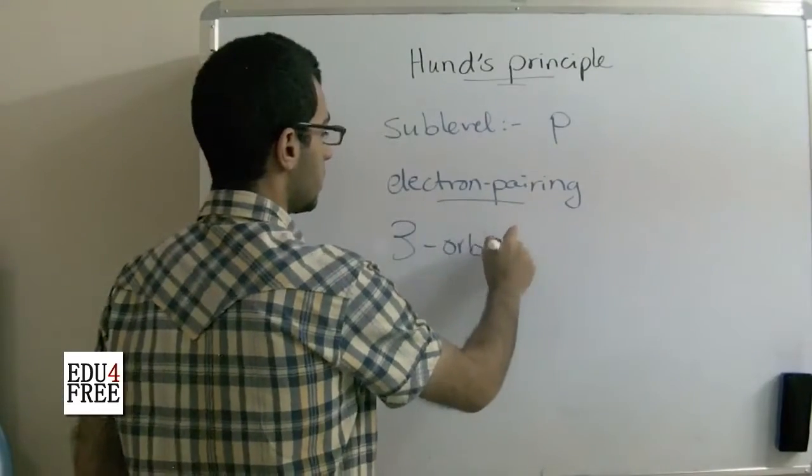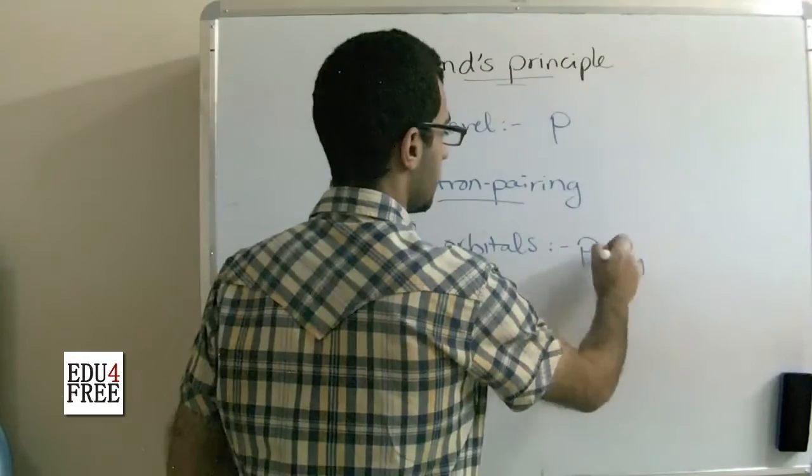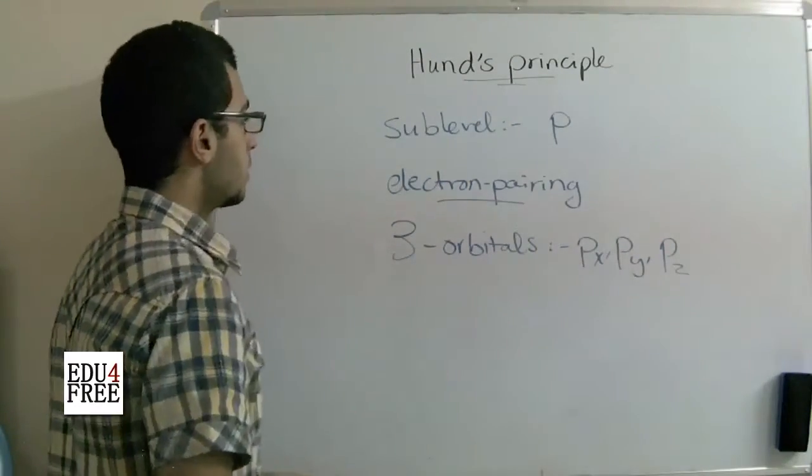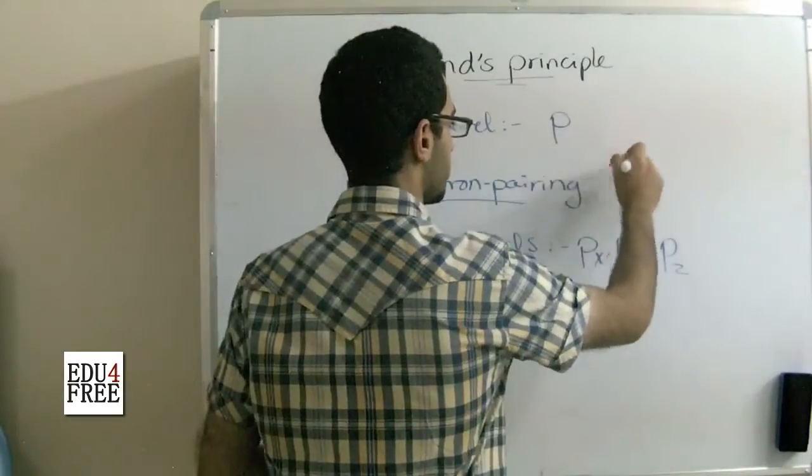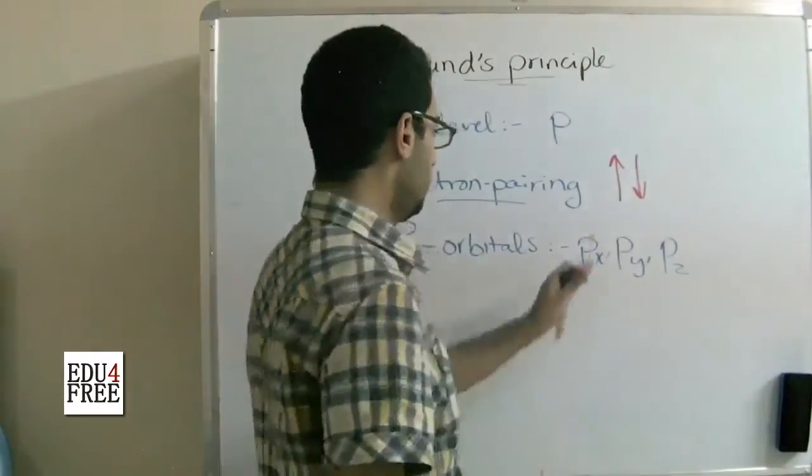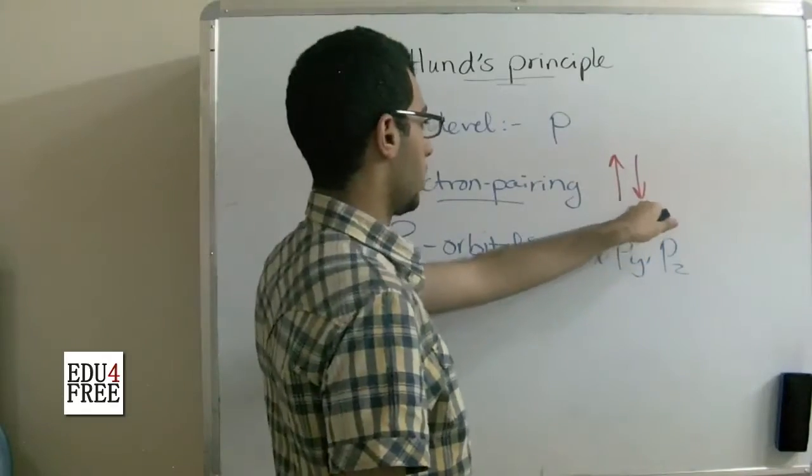which are Px, Py, and Pz. So having two electrons is like that: one upwards and one downwards, one rotating clockwise and one rotating anti-clockwise.